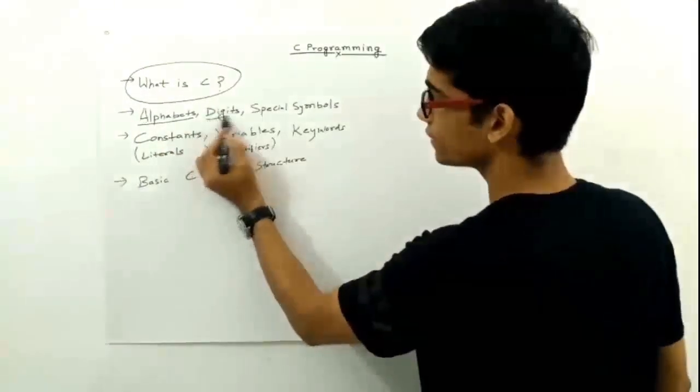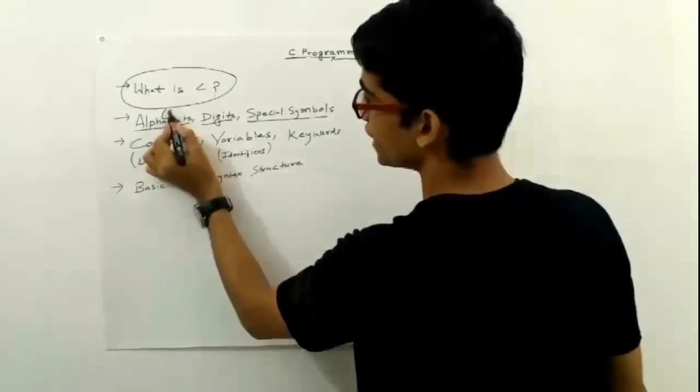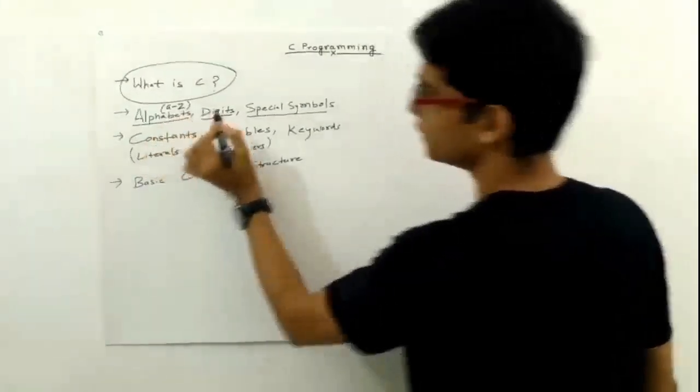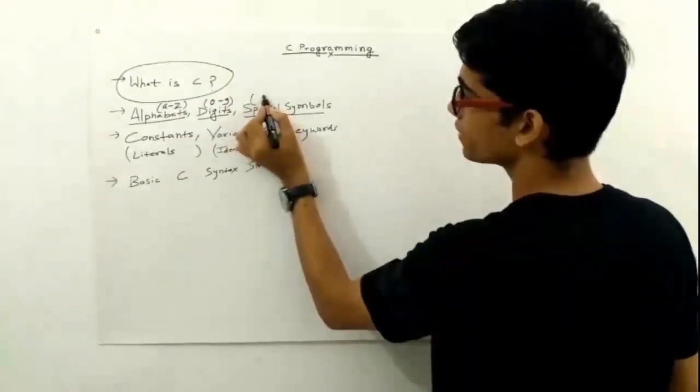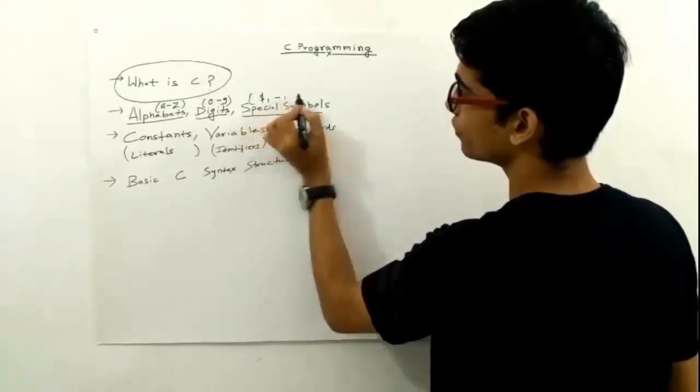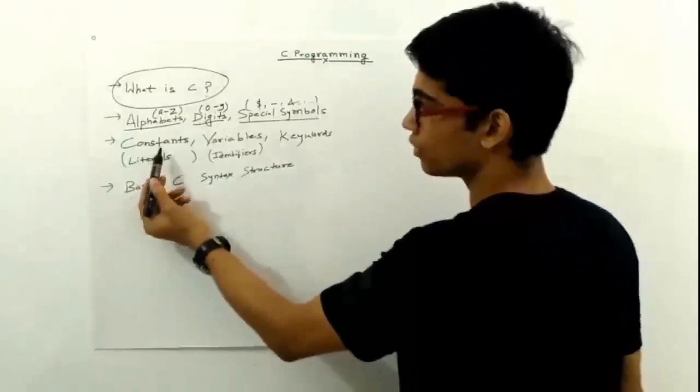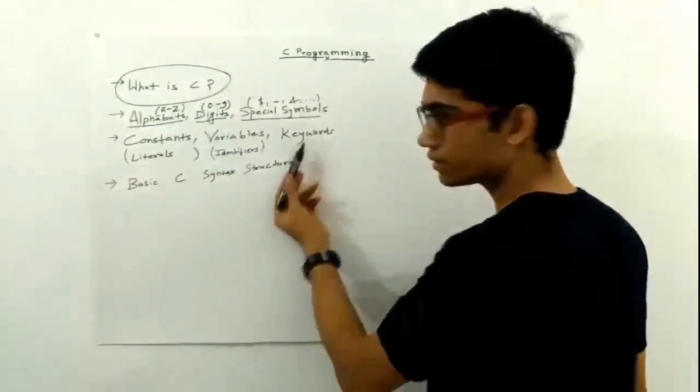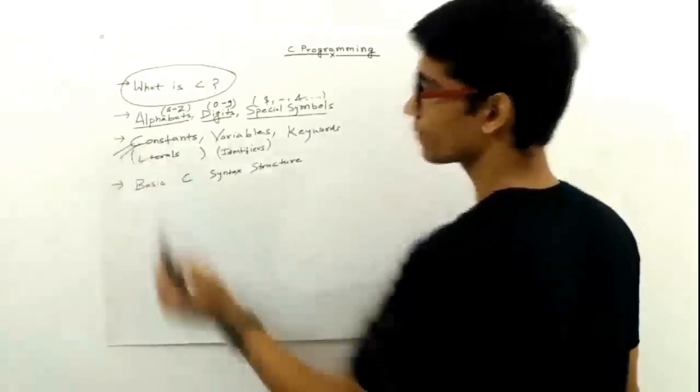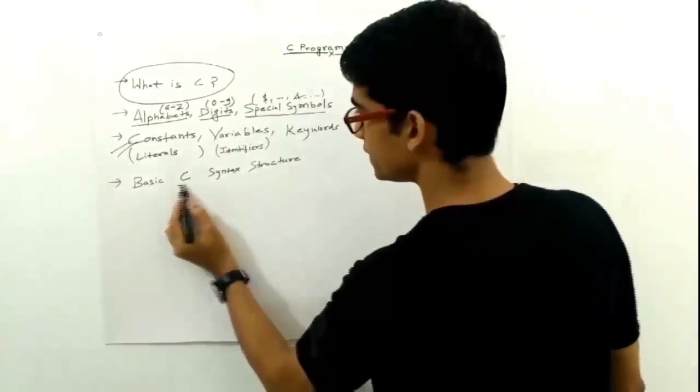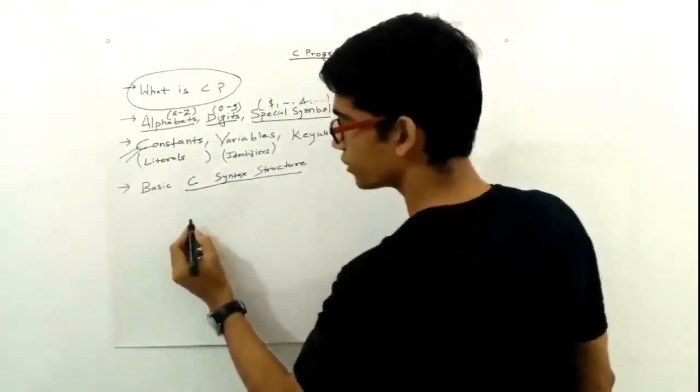The alphabets are from A to Z, digits 0 to 9, and special symbols like dollar, underscore, and so on. I will come to constants, variables, and keywords at a later stage. Before we discuss these things, let me tell you the basic C syntax structure.